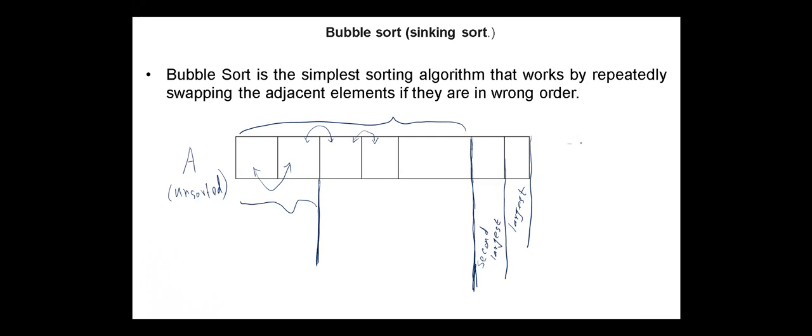This means that in bubble sort, we need two nested loops. In the external loop for i, we need n iterations, and in the internal loop for j, we need n minus i minus 1 iterations.